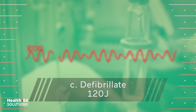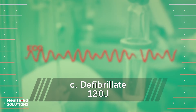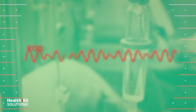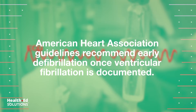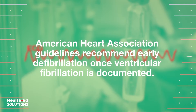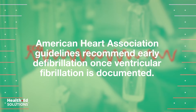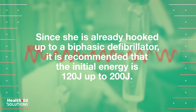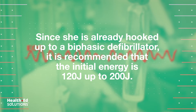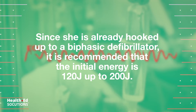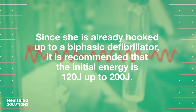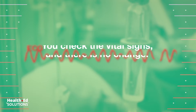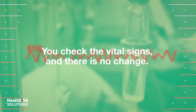Correct answer C: Defibrillate 120 joules. American Heart Association guidelines recommend early defibrillation once ventricular fibrillation is documented. Since she is already hooked up to a biphasic defibrillator, it is recommended that the initial energy is 120 joules up to 200 joules. You check the vital signs and there is no change.